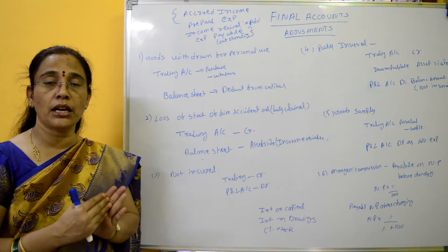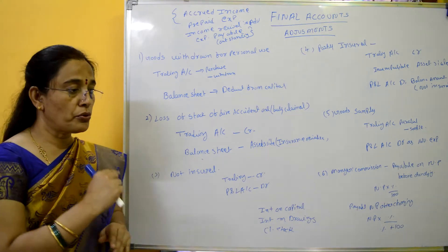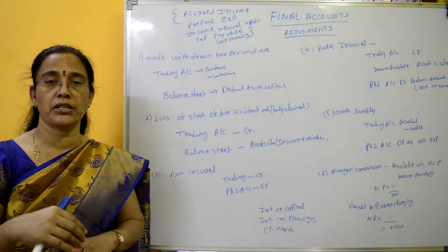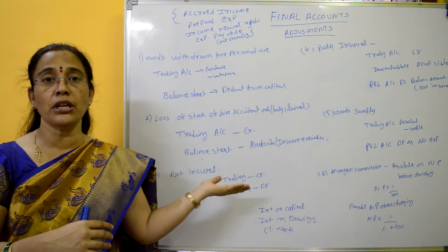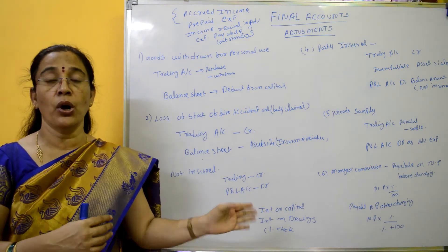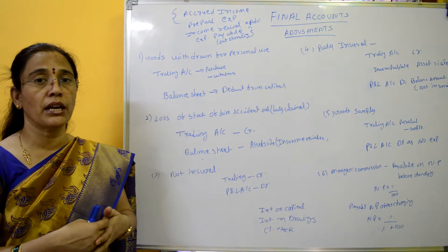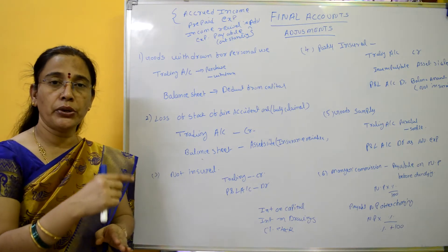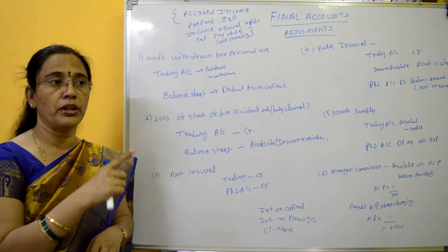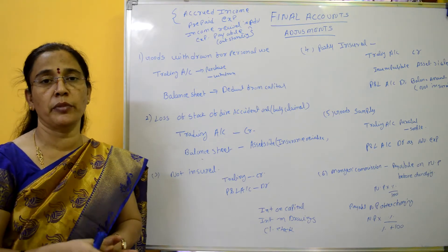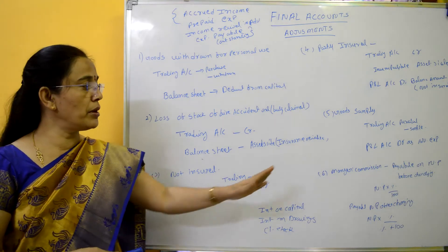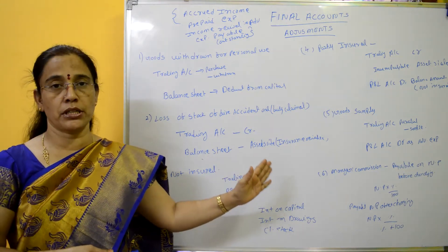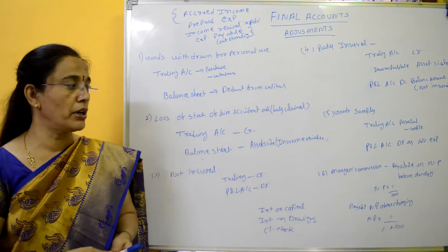How do we calculate the manager's commission? We calculate the net profit — before charging the commission, or after charging. The formula is 10% divided by 100 applied to net profit. We prepare the statements and show the manager's commission as a credit for the manager.